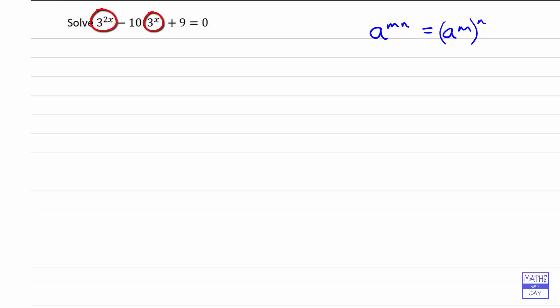But if we could write both of them in the same sort of way, then we'd have a quadratic. So what we're going to do in this question is we're going to write the 3 to the 2x as 3 to the x all squared. So in fact, we're using the fact that we can write this as a to the n to the m.